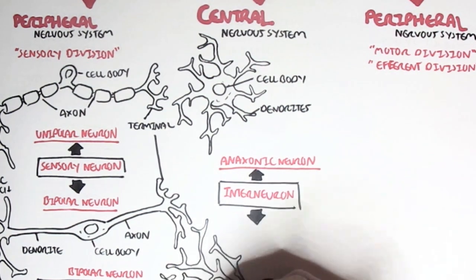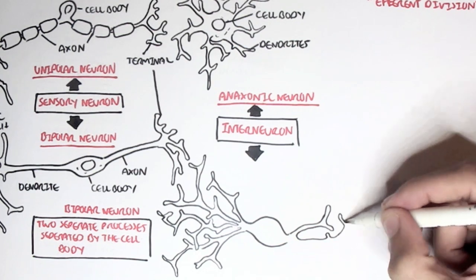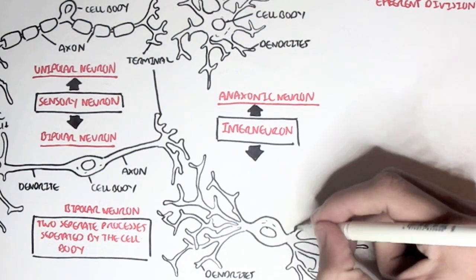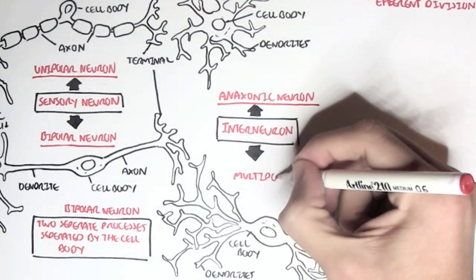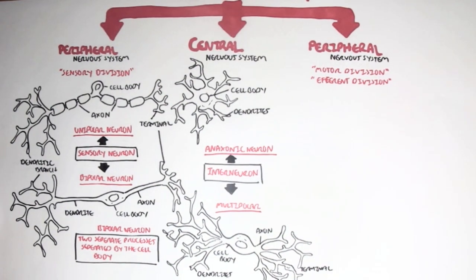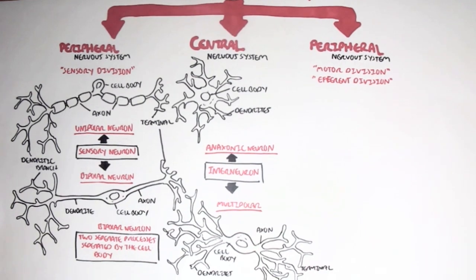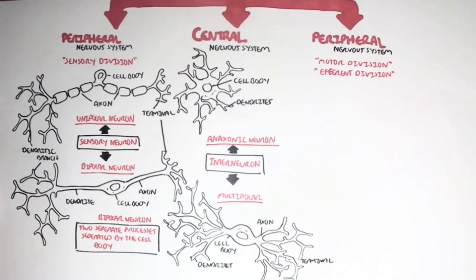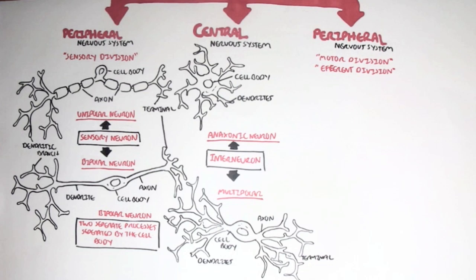Then we have a multipolar neuron type, which contains dendritic branches on one end and then straightaway an axon terminal branch on the other, separated by the cell body. Some multipolar neurons in the central nervous system look slightly different than this, and we shall soon see what I am talking about.